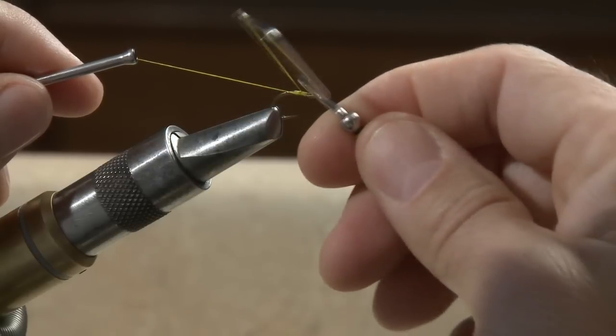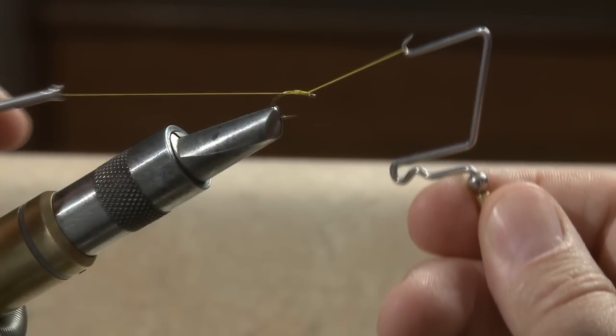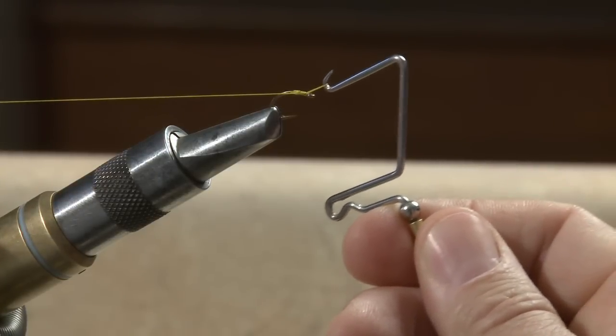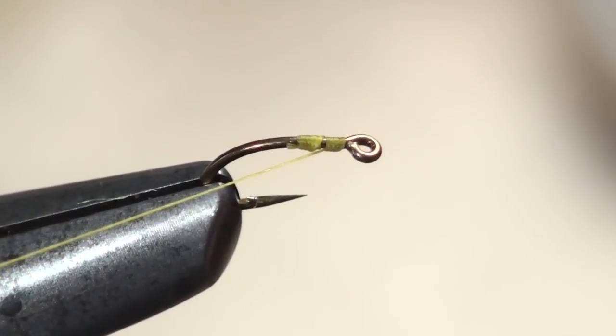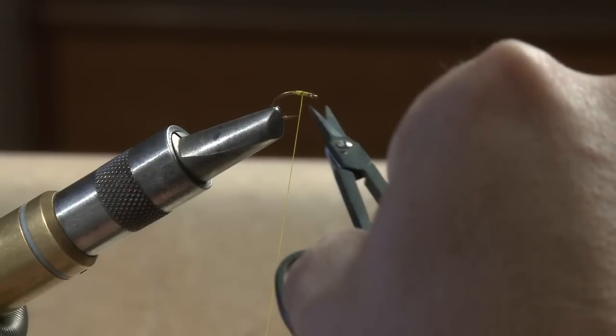Carefully free the thread from the indent, but keep the thread looped around the tool's hook while you pull your bobbin straight back. As the loop closes, remove the hook from the thread. You can then snip the thread and the whip finish will stay together.